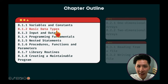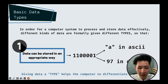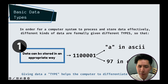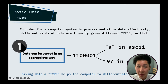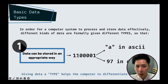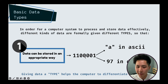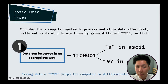Let's proceed to the second subtopic: basic data types. Before we code the different data types in Python, let's go through why we have data types. In order for a computer system to process and store data effectively, different kinds of data are given different types so data can be stored appropriately. If we remember from chapter one, computers can only understand binaries. For example, the binary value 01000001 can mean either the character A in ASCII or the number 97 — so we give each data a type to differentiate them.